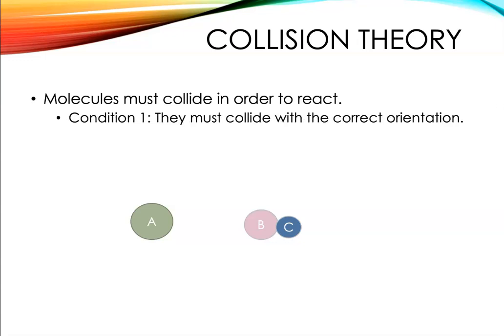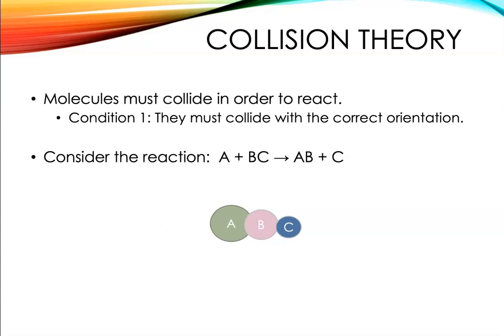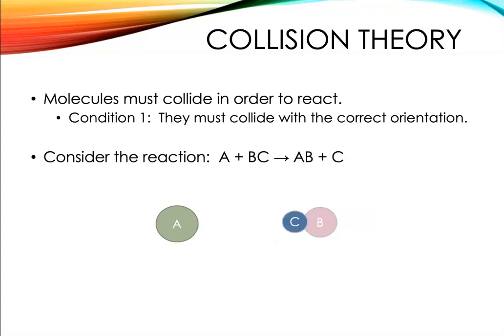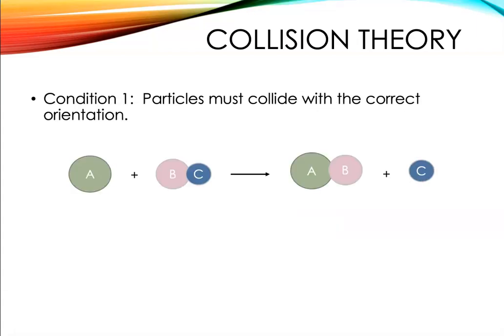The first condition is that the particles must collide with the correct orientation. Let's think about the reaction A + BC, which forms AB and C. When the A atom comes in and hits the BC molecule on the B side, the reaction can occur, making the AB molecule and the C goes flying off. But if the BC molecule is rotated so that the A atom collides with the C side, the reaction won't occur.